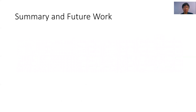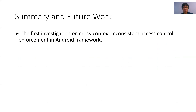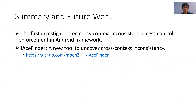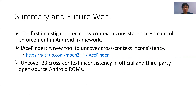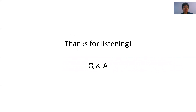To summarize our work: to the best of our knowledge, we conduct the first investigation on inconsistent access control enforcement across the Java context and native context of the Android framework. To uncover cross-context inconsistencies, we designed and developed a tool named IAceFinder, whose code is available at a GitHub repository. Applying IAceFinder to 14 open-source Android ROMs, we discovered 23 cross-context inconsistencies of access control enforcement that can be abused to compromise the device and invade user privacy. In future work, we plan to extend IAceFinder to more types of access control enforcement. That's all for the presentation. Thanks for listening.